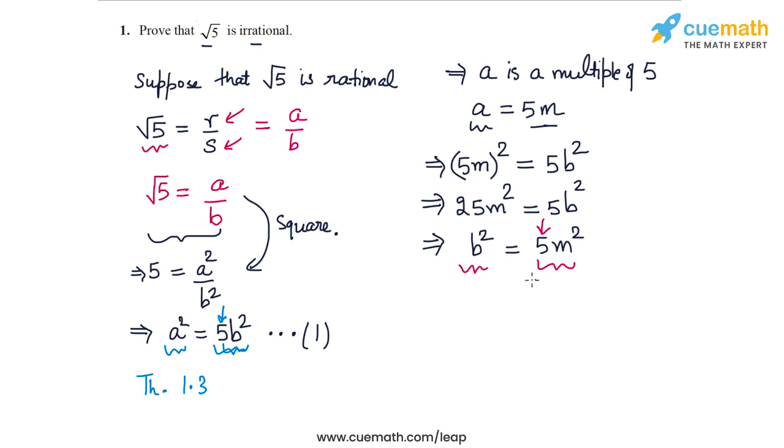And now because b is a multiple of 5, I can write b as 5 times some integer n. So what I have concluded is that a is of the form 5 m, a is a multiple of 5, and b is of the form 5 n. So b is also a multiple of 5.